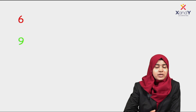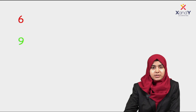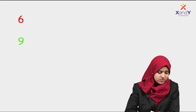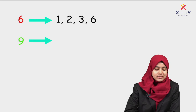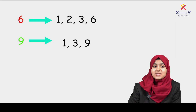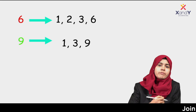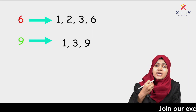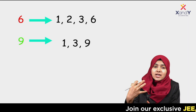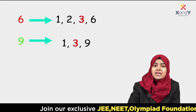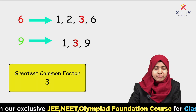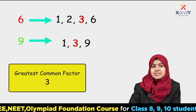Let's take a look at 6 and 9 as an example. The factors of 6 are 1, 2, 3, and 6. The factors of 9 are 1, 3, and 9. If you look at the highest common factor — the greatest, largest whole number — it is 3. So 3 is the greatest common factor of 6 and 9.